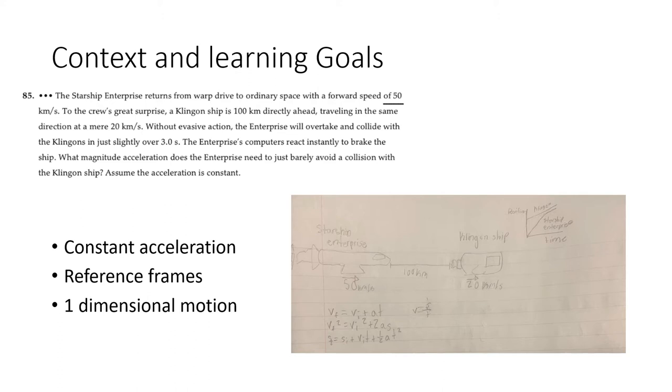The Enterprise reacts instantly to brake the ship. So the question asks, what magnitude of acceleration does the Enterprise need to barely avoid a collision with the Klingon ship?